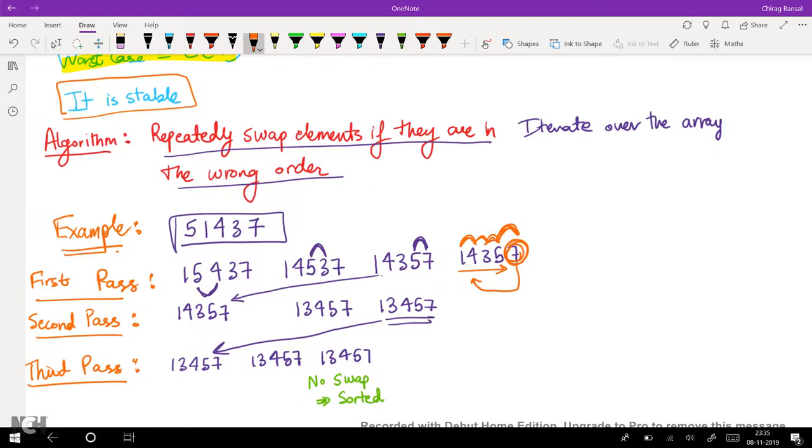So 7 will be the largest element. So in the second pass, we first copy the element over here. In the second pass what we do, we check this.